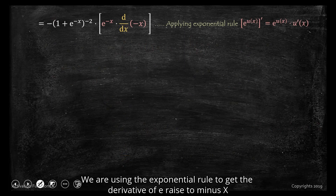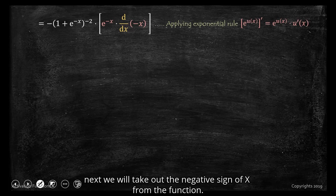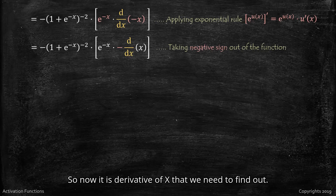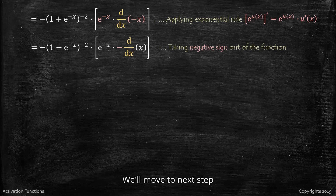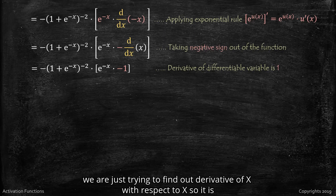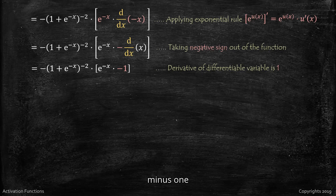Here we are using the exponential rule to get the derivative of e raised to minus x. Next, we take out the negative sign of x from the function, so now it is the derivative of x that we need to find. The derivative of a differentiable variable is 1, so the derivative of x with respect to x gives us minus 1.